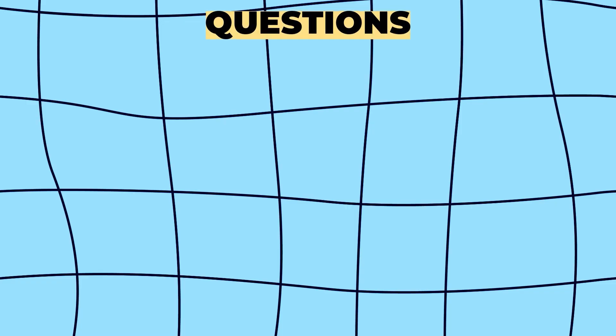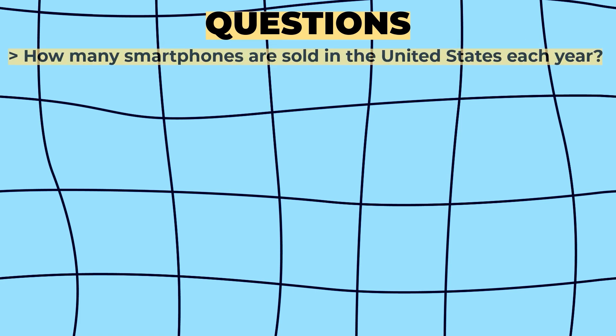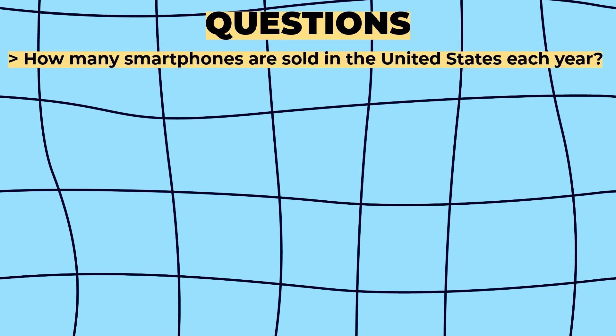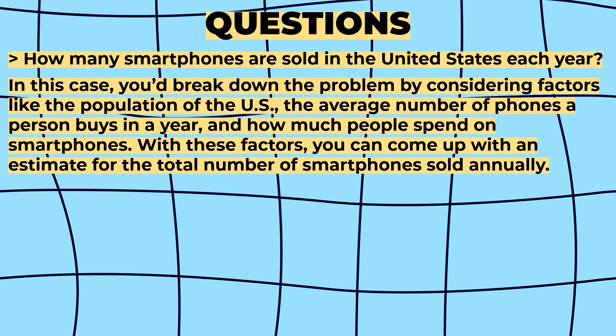You'll often face guesstimate-style questions where you have to break down the problem and make reasonable assumptions to arrive at a solid estimate. It might sound a bit daunting at first, but with practice you'll learn how to approach these problems logically and with confidence. For example: how many smartphones are sold in the United States each year? You'd break down the problem by considering factors like the population of the US, the average number of phones a person buys in a year, and how much people spend on smartphones, to arrive at an estimate for total smartphones sold annually.